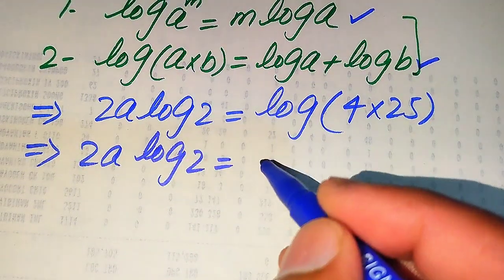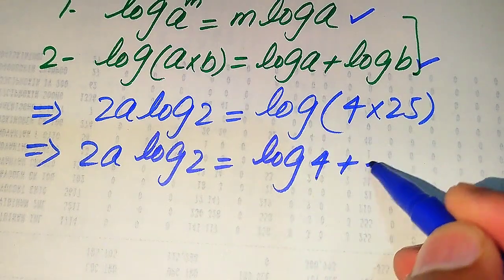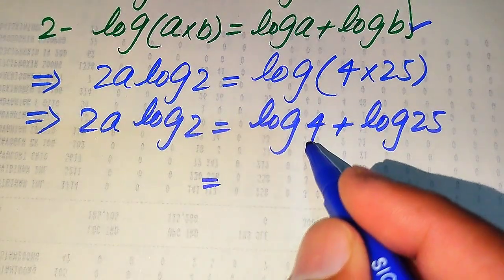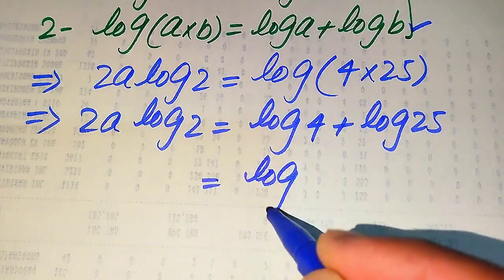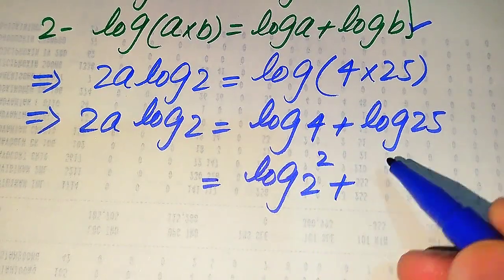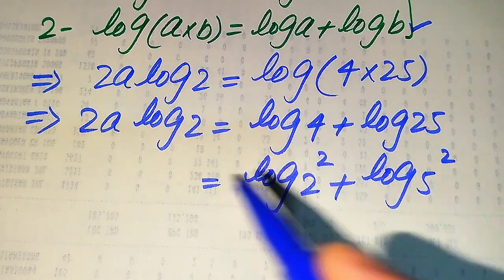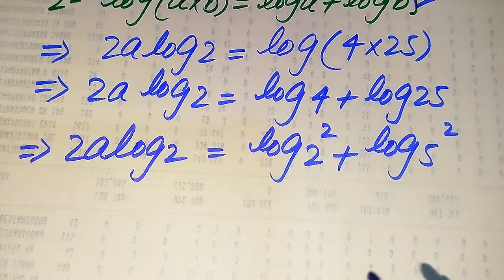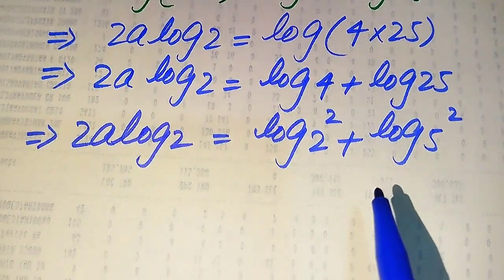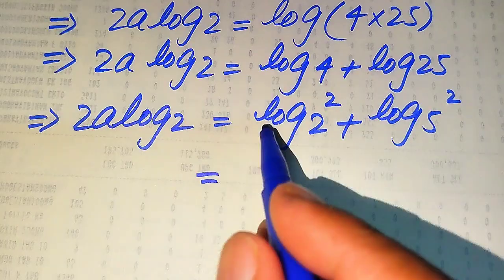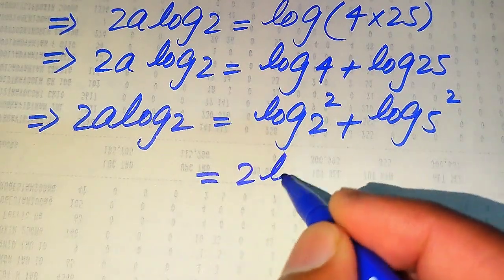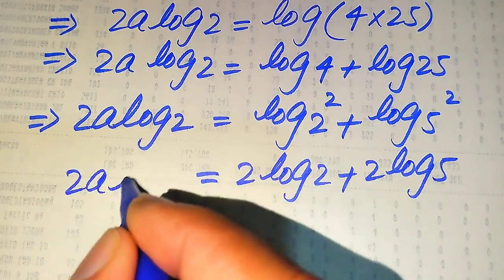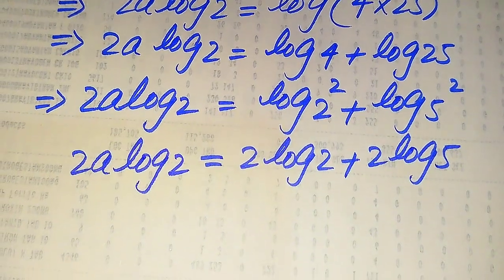We use the product rule of log: log of 4 times 25 becomes log of 4 plus log of 25. We write both terms in prime factor form — the prime factors of 4 are 2 squared, and the prime factors of 25 are 5 squared. We again apply the power rule to the right hand side, giving us 2a times log 2 equals 2 times log 2 plus 2 times log 5.